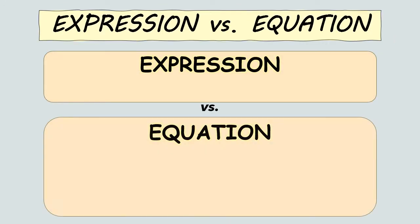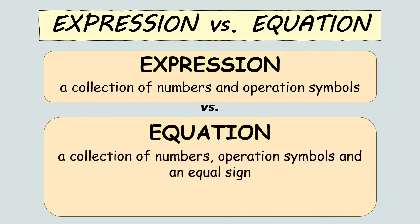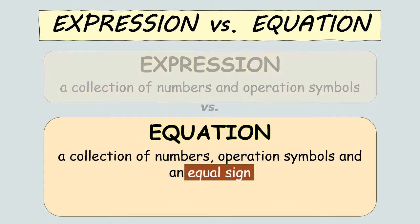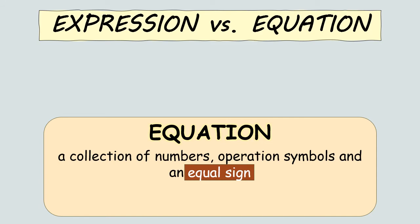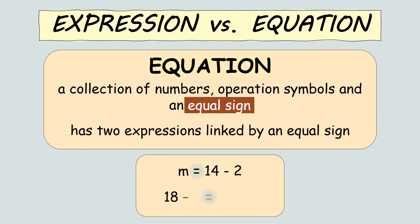So, what now is an equation? If an expression is a collection of numbers and operation symbols, then an equation is a collection of numbers, operation symbols, and an equal sign. This equal sign makes the difference. It acts as a bridge connecting two expressions.